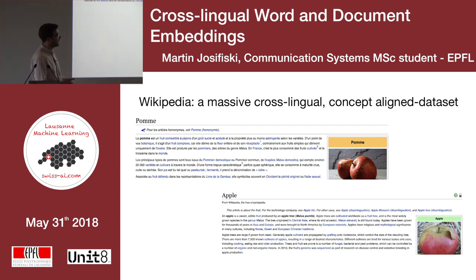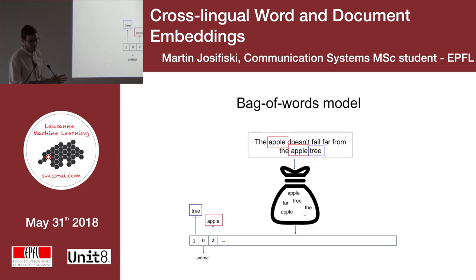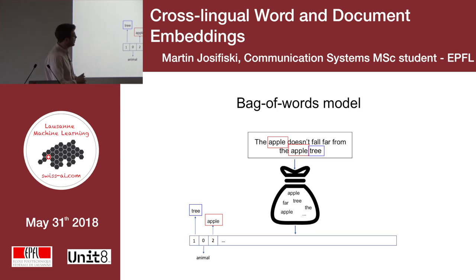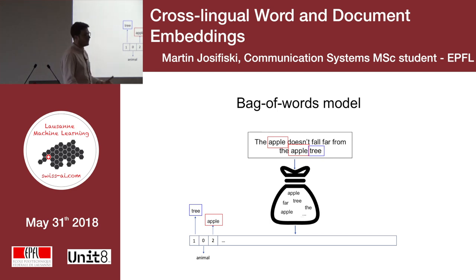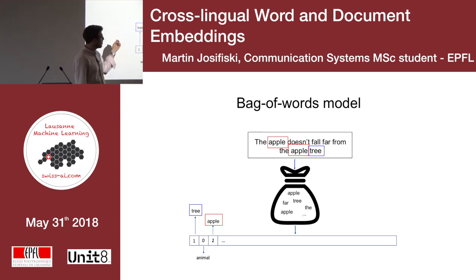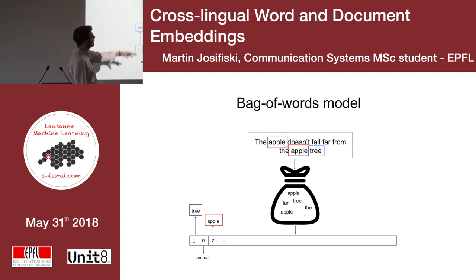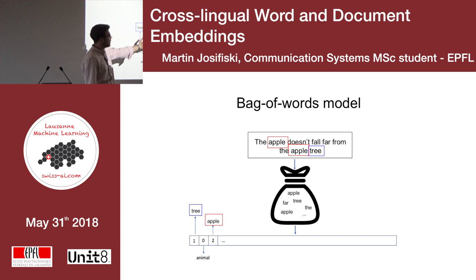Here you can see an example of the concept 'Apple' being described in English and French. We process each document using the bag-of-words model. For each document, we take the words from it and the vocabulary in the language it is written in. For each word in the vocabulary, we note how many times the given word occurs in the text. In this example, the word 'tree' appears only once, 'animal' does not occur at all, and 'apple' occurs twice. We do this for all documents in our dataset.